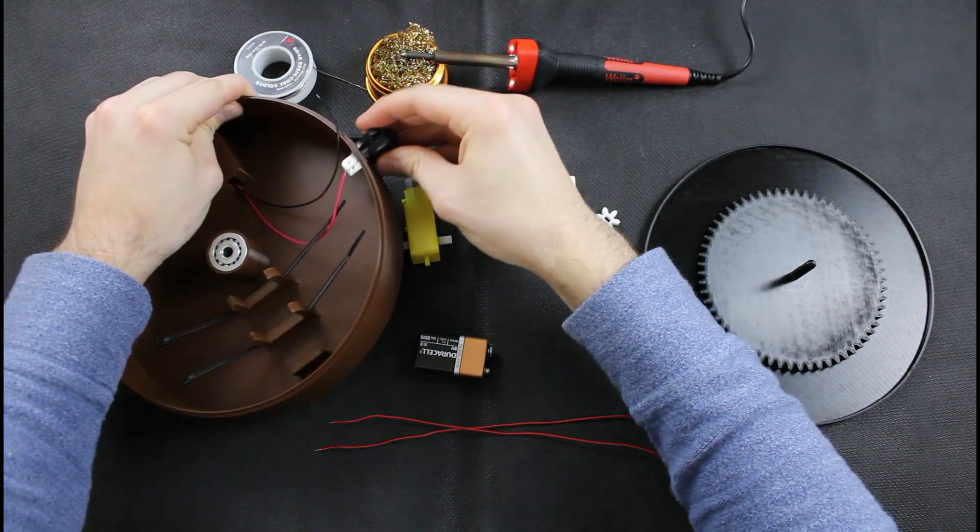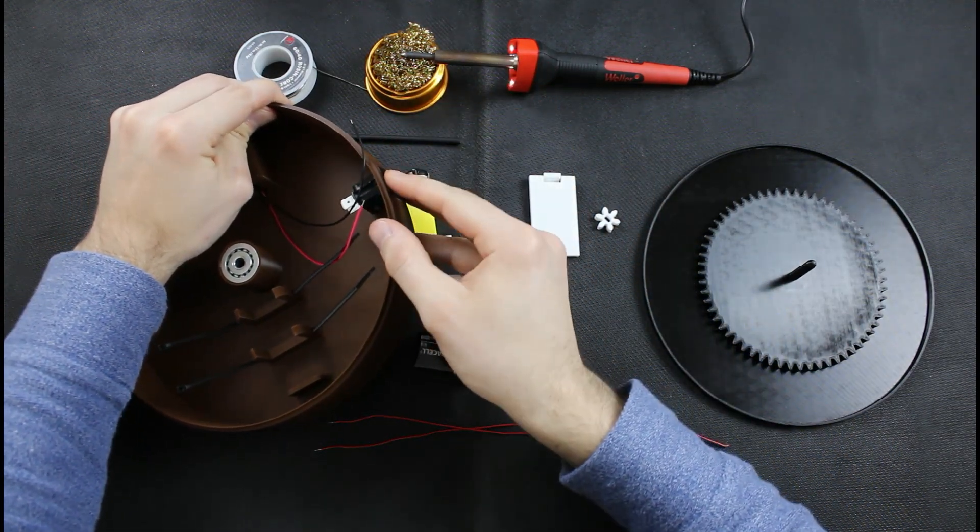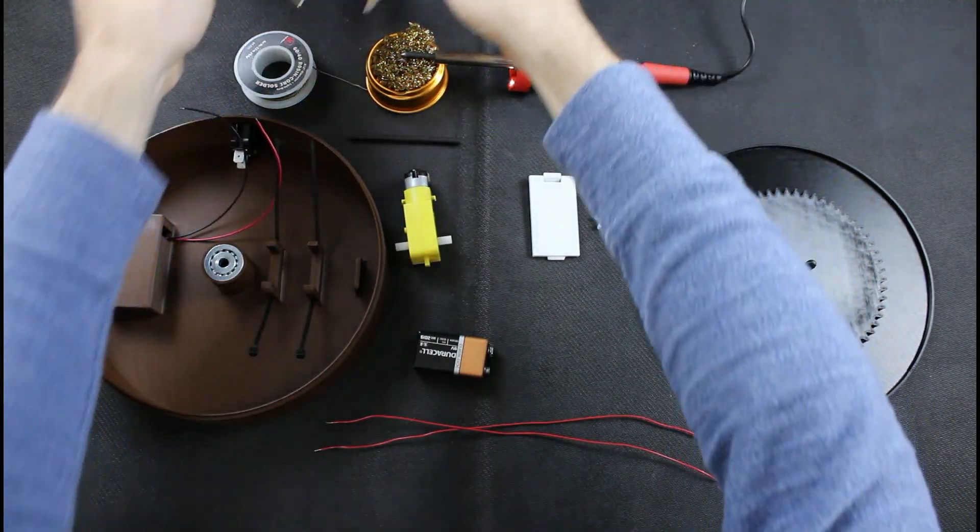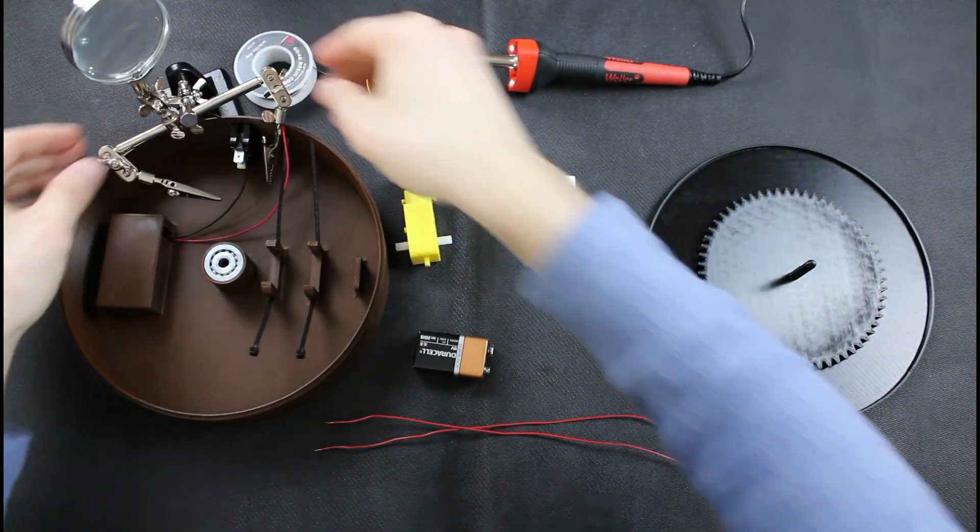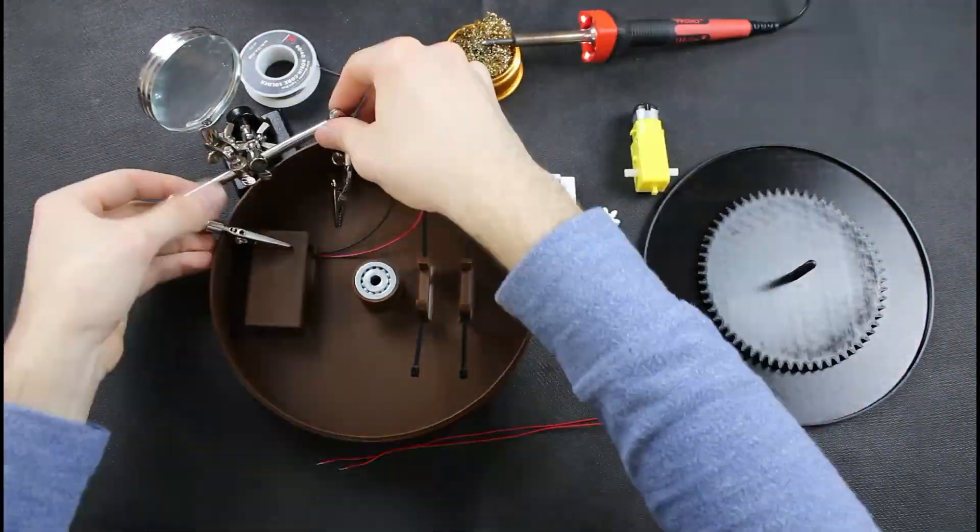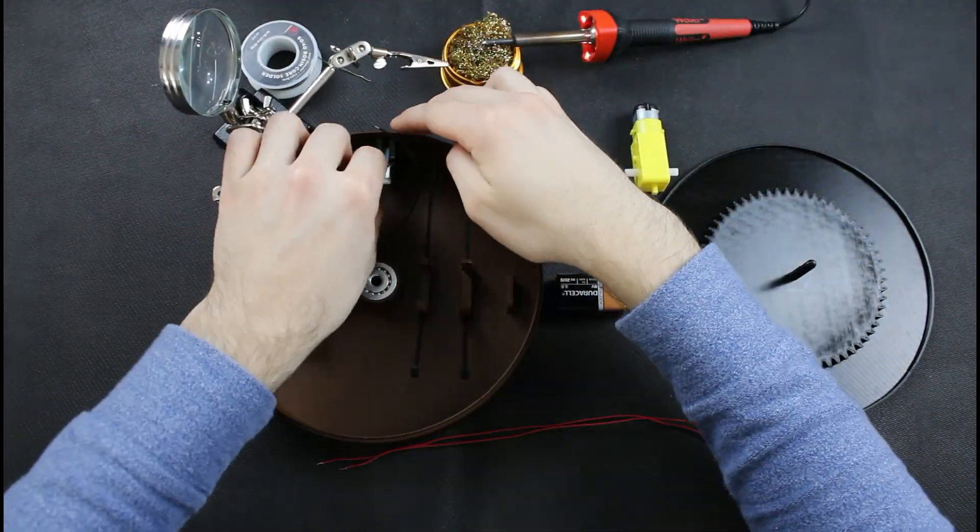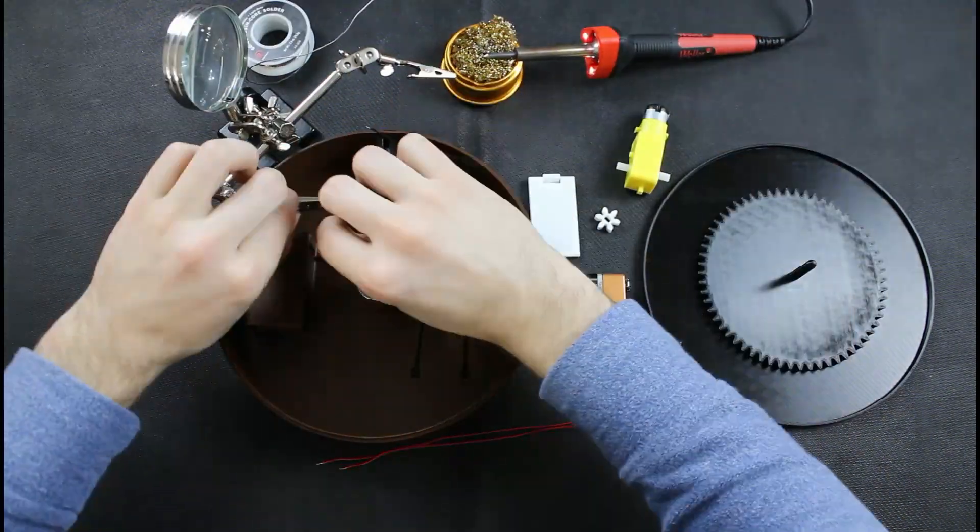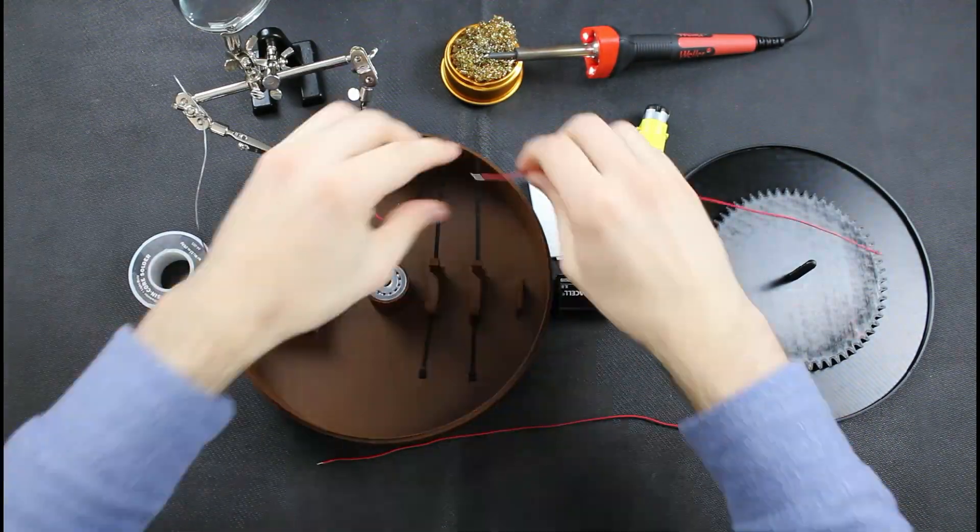I'll just press the switch into its spot and then get ready to solder my wires to the switch. So I'll solder my positive terminal for the battery to one end of the switch, and then I'll take a spare wire and solder that to the other end of the switch.